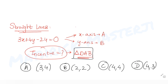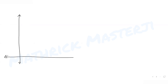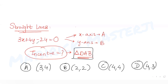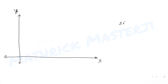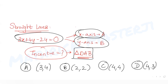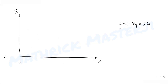Let's solve this. First, I draw the x-axis and y-axis. The line is 3x + 4y = 24. To find where it intersects the x-axis, I put y = 0, which gives 3x = 24, so x = 8.